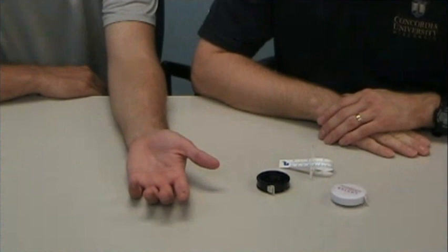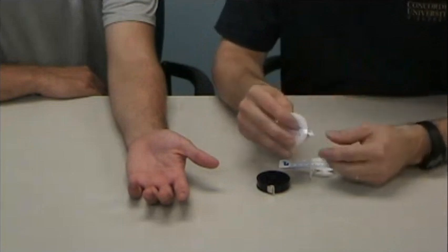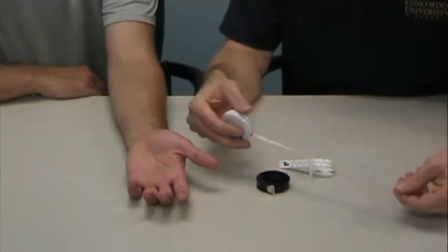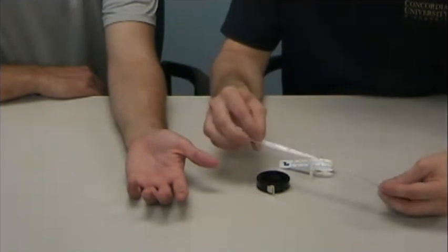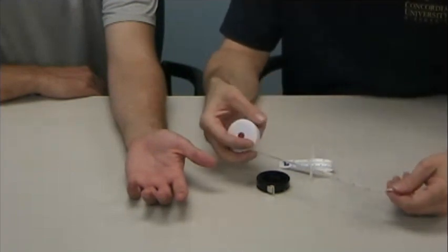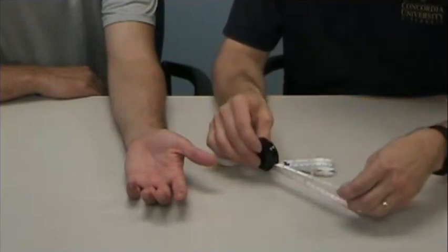In this video, I want to briefly describe the procedure for performing circumferential measurements to measure edema. Circumferential measurements are typically done with just a measuring tape, recorded in centimeters and millimeters as opposed to inches. There are a variety of tools available to do this, and I'm going to show you a couple different ones.